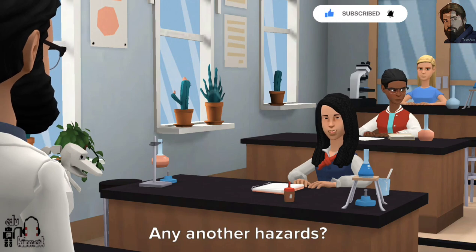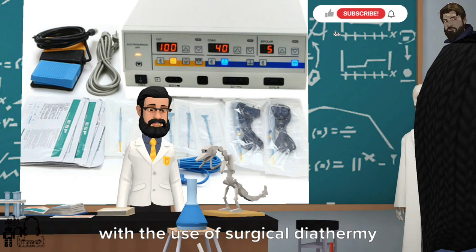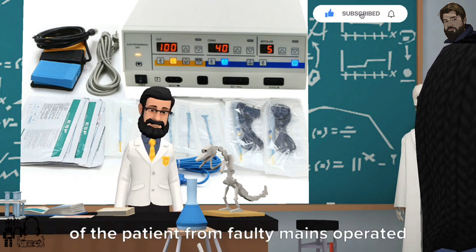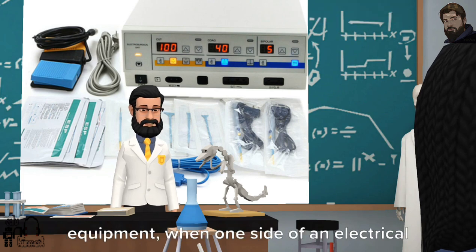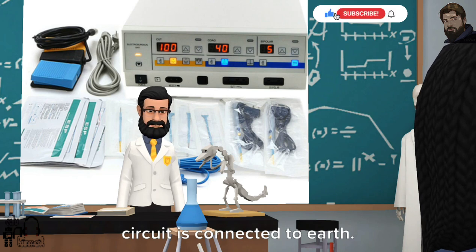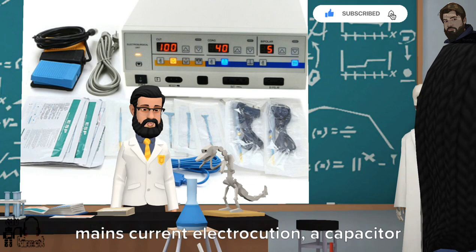Any other hazards? Another serious hazard associated with the use of surgical diathermy machines is the possible electrocution of the patient from faulty mains-operated equipment when one side of an electrical circuit is connected to earth. In order to provide protection against mains current electrocution, a capacitor RF earthed is generally included between the indifferent lead and earth.